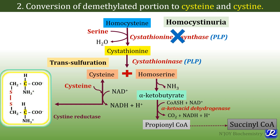In protein structure, two molecules of cysteine are linked together by disulfide linkage to form cystine. So in proteins, cysteine is present in the form of cystine, and this occurs with the help of the enzyme cysteine reductase.